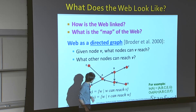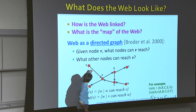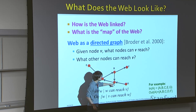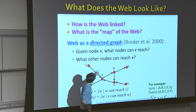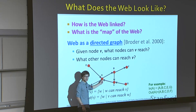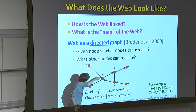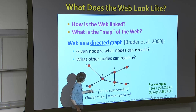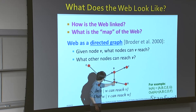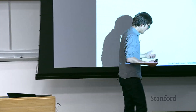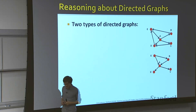For a node a, the in-component includes nodes b, c, e, and g — all nodes from which you can reach a. The out-component of a includes d, b, f, and c — all nodes you can reach starting from a. These are the two key sets: nodes that can reach me, and nodes I can reach.